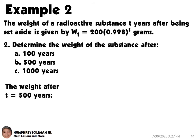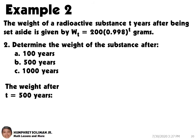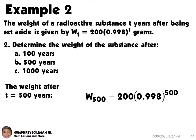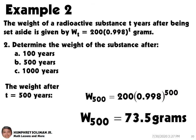Next, in number 2b, the weight after 500 years is when T equals 500. So if we substitute T equals 500 in the equation used to model the weight of the radioactive substance, we will get W500 equals 200 times 0.998 raised to 500. Therefore, the weight after 500 years is W500 equals 73.5 grams.